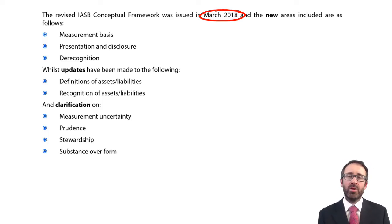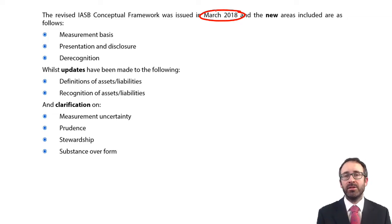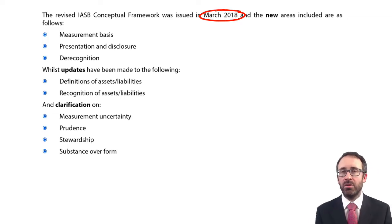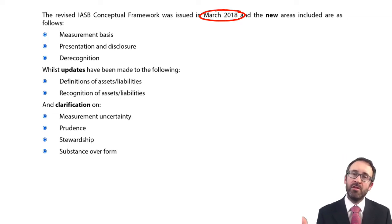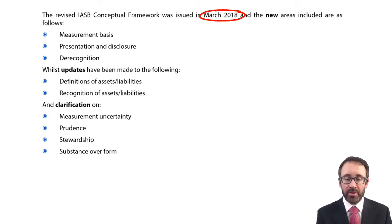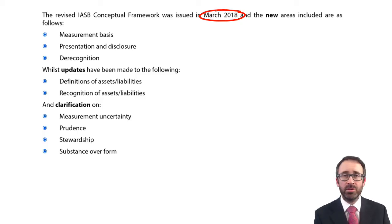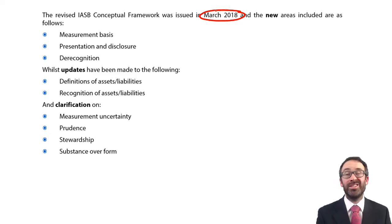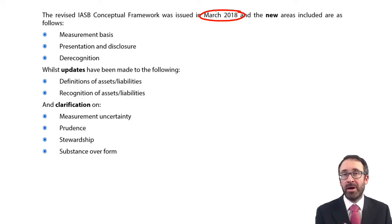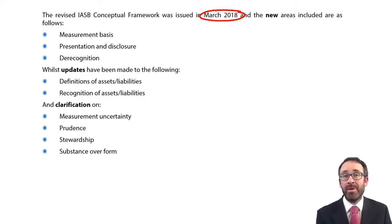There is a little bit extra with regards to presentation and disclosure, given that the IASB — the International Accounting Standards Board — is trying to improve the presentation and disclosure within financial statements. They've brought into the framework guidance to help users and preparers of accounts. Also, we always used to have a section on recognition, but now there's also a section on de-recognition, which covers things like the disposal of an item of PPE and paying off a loan within financial instruments.